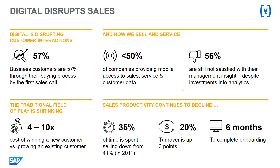So digital disrupts sales. On average, business customers are 50% of the way through their buying process by the time they make that first sales call. Prior to the days of mobility, e-commerce and social media, these customers may have simply picked up the phone and made contact with us. Now a lot of this research is happening behind the scenes. The real question we have to ask ourselves is: is our software, our CRM application, our analytics geared up for this disruption in terms of information and our sales process?